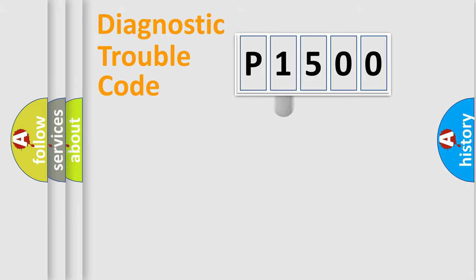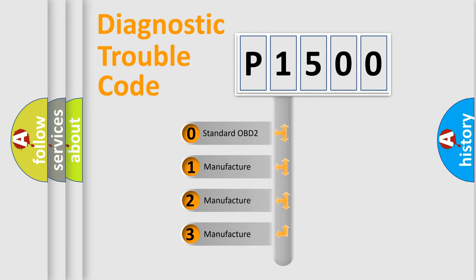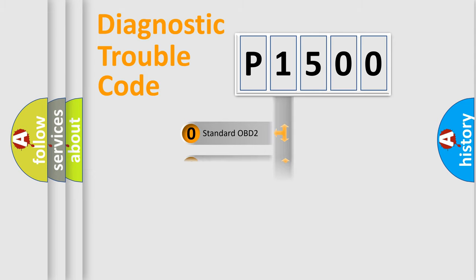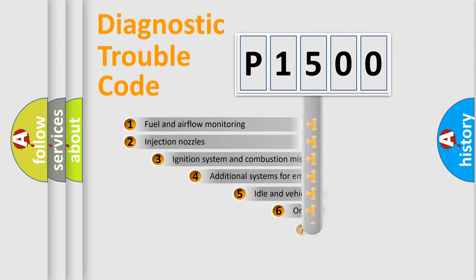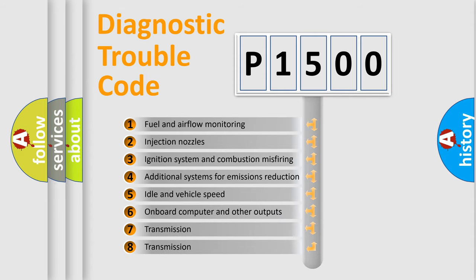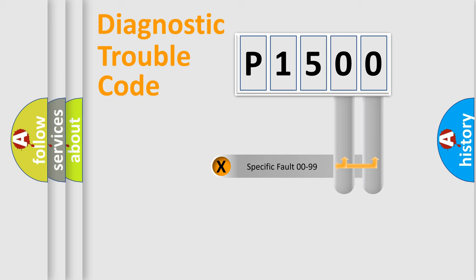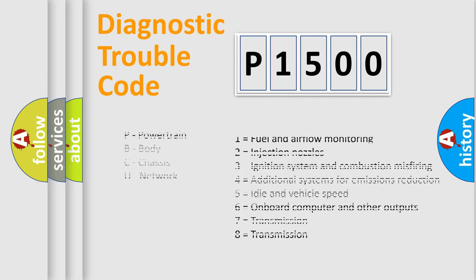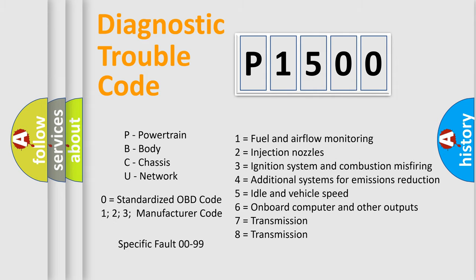This distribution is defined in the first character of the code. If the second character is expressed as zero, it is a standardized error. In the case of numbers one, two, or three, it is a more manufacturer-specific expression of the car-specific error. The third character specifies a subset of errors. Only the last two characters define the specific fault of the group. This division is valid only if the second character code is expressed by the number zero.